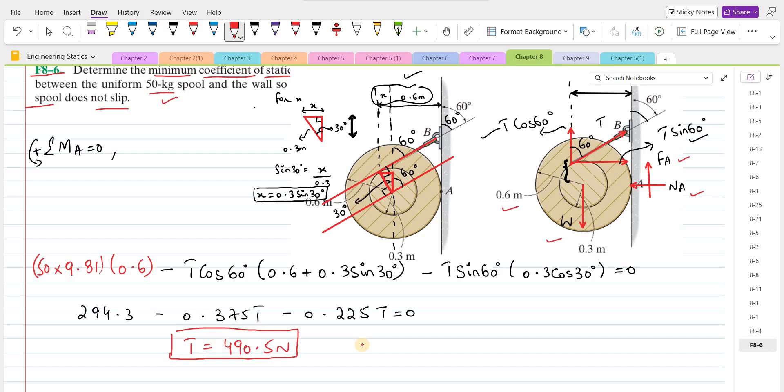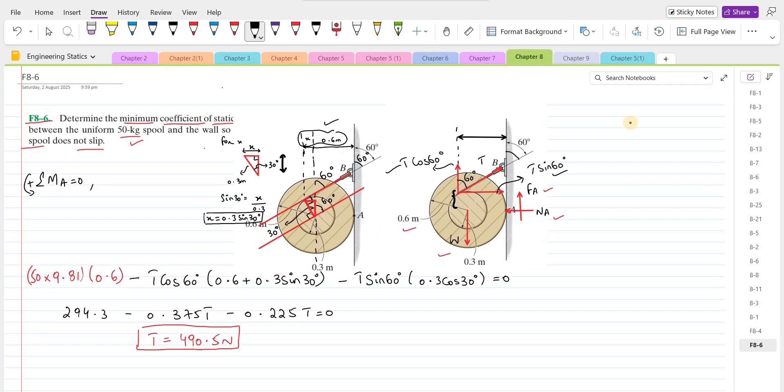Now using this value of T, we can figure out the coefficient of static friction. If you guys have any questions in finding the x, feel free to ask in the comment section and I will try to answer them as soon as possible. For the coefficient of static friction, as given in the problem, the spool does not slip. So it means the frictional force FA can be written as the coefficient of static friction times the normal force NA. So we have to find both FA and NA.